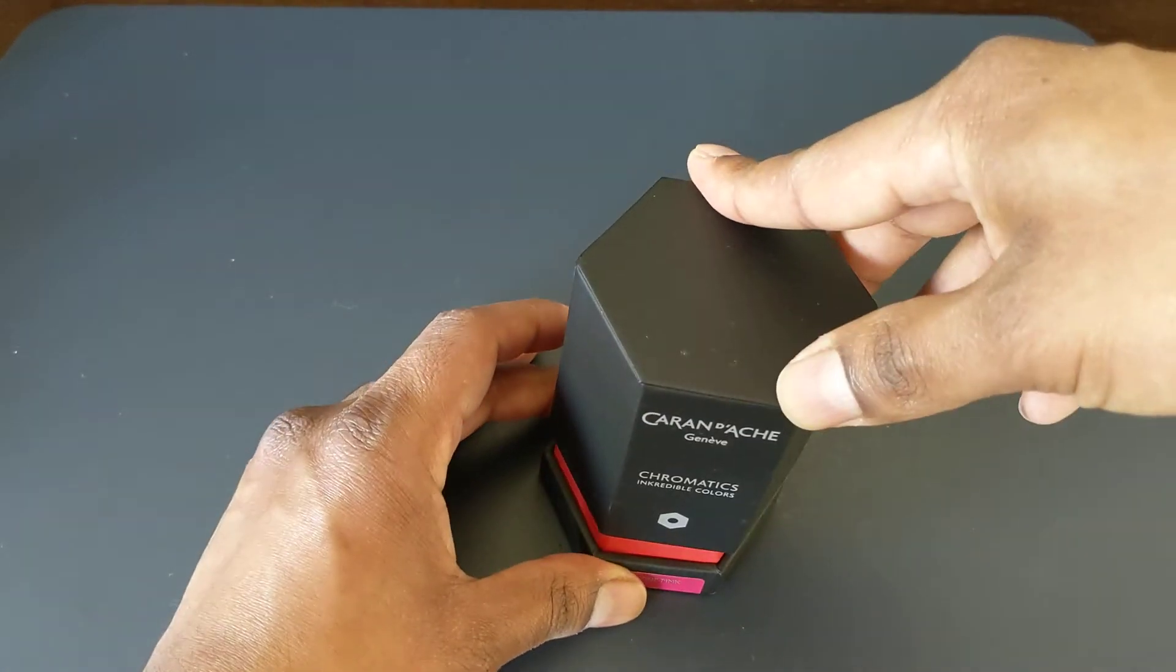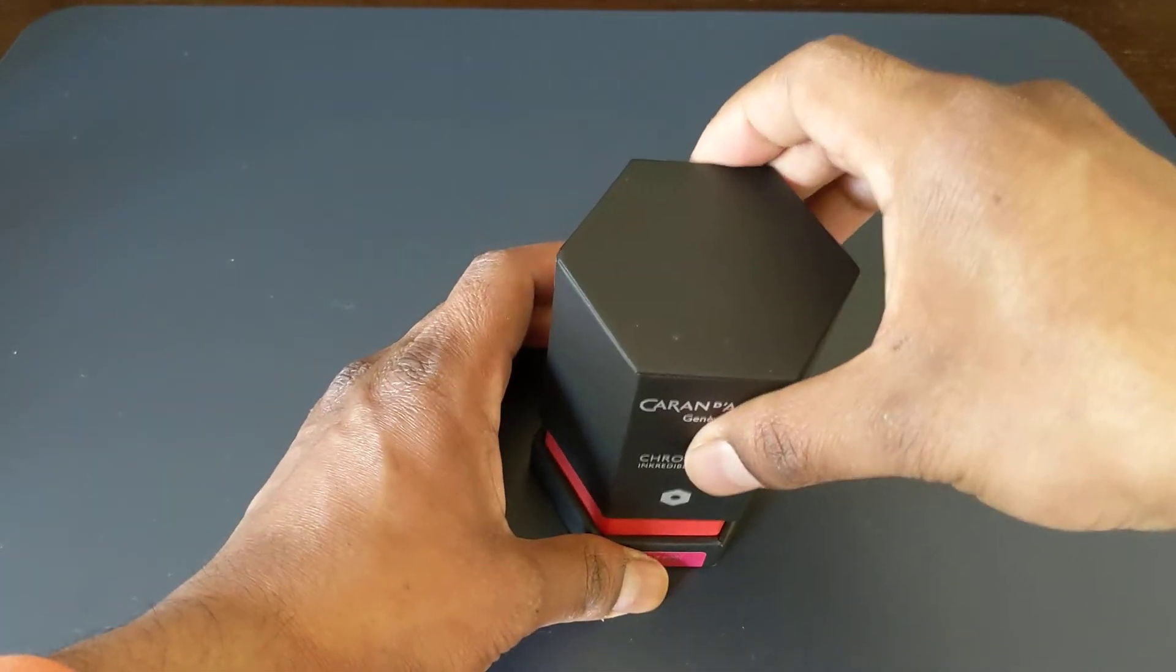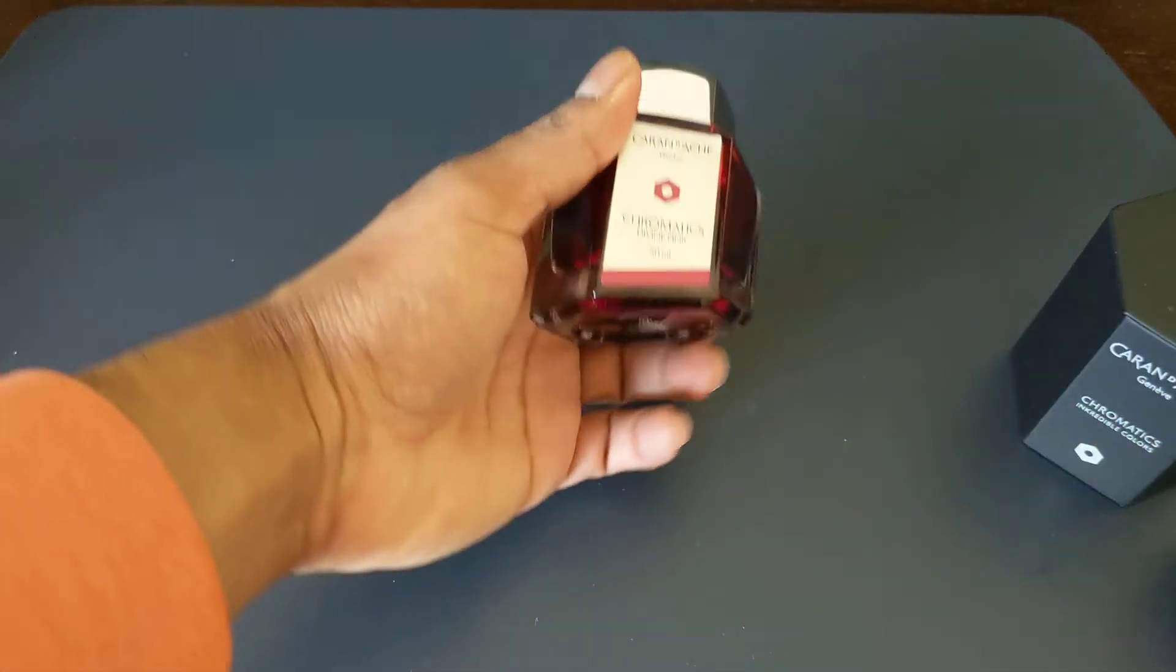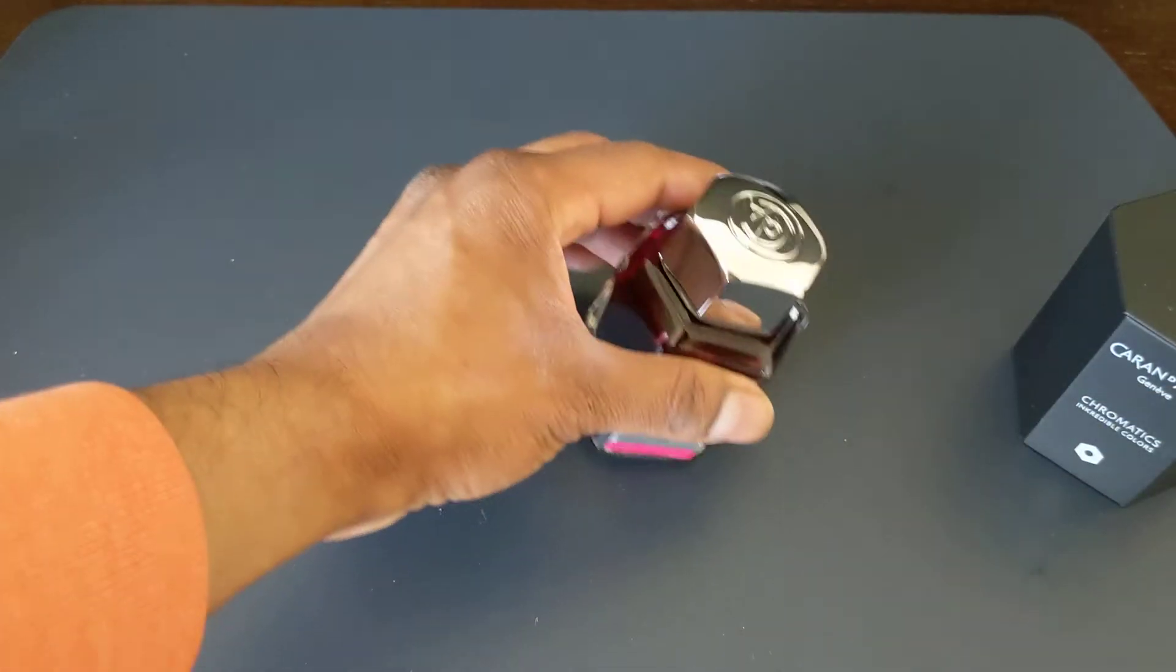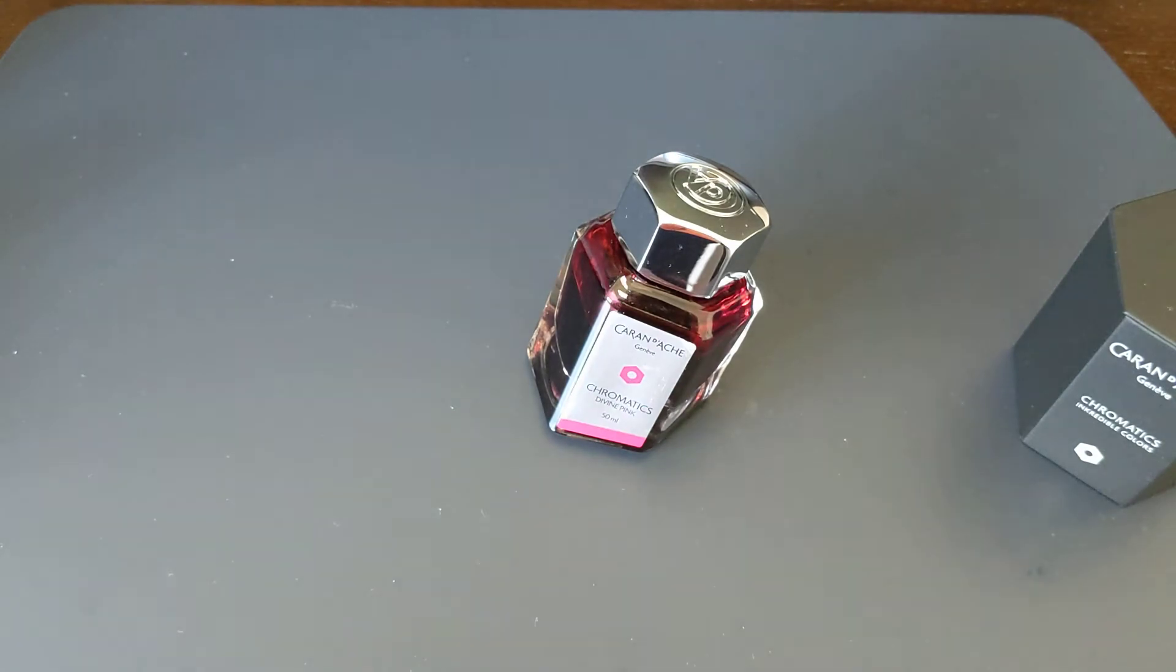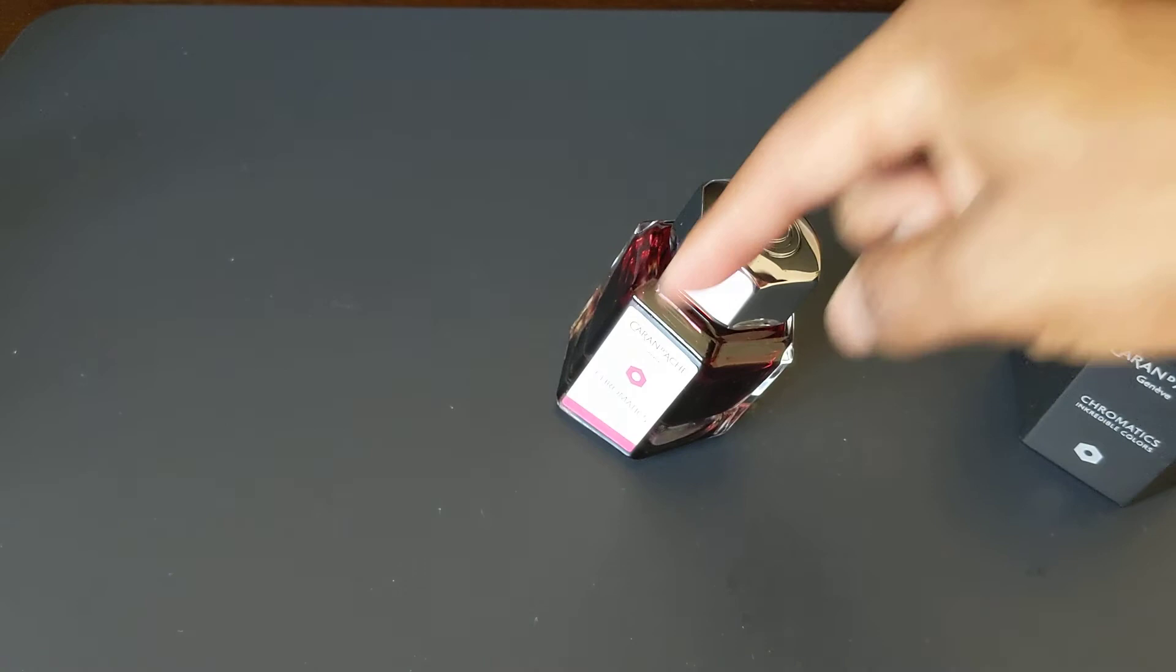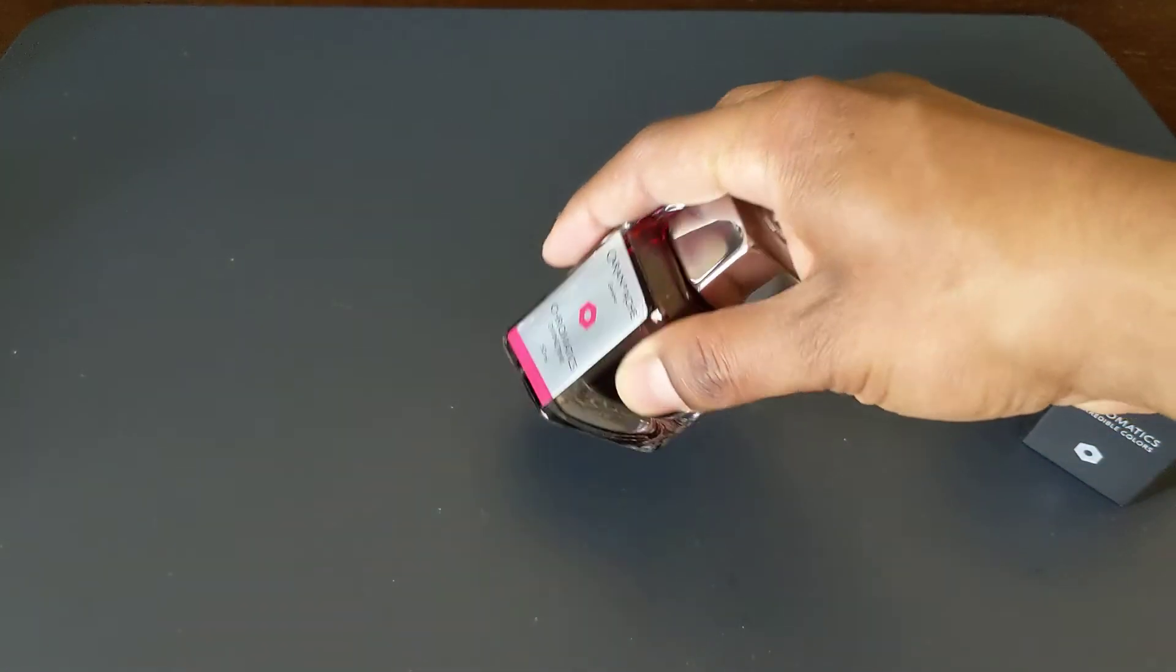Next one, this is Caran d'Ache from the chromatics line. The packaging is very nice as you can see. Here is the ink bottle itself. You can see it's actually on an angle, and so the point of that is that it actually makes it easier to fill the pen as you can actually put the nib in sideways and you get a little bit higher level of ink. So this is both a nice looking bottle and a functional bottle, which is one of the reasons I like it.